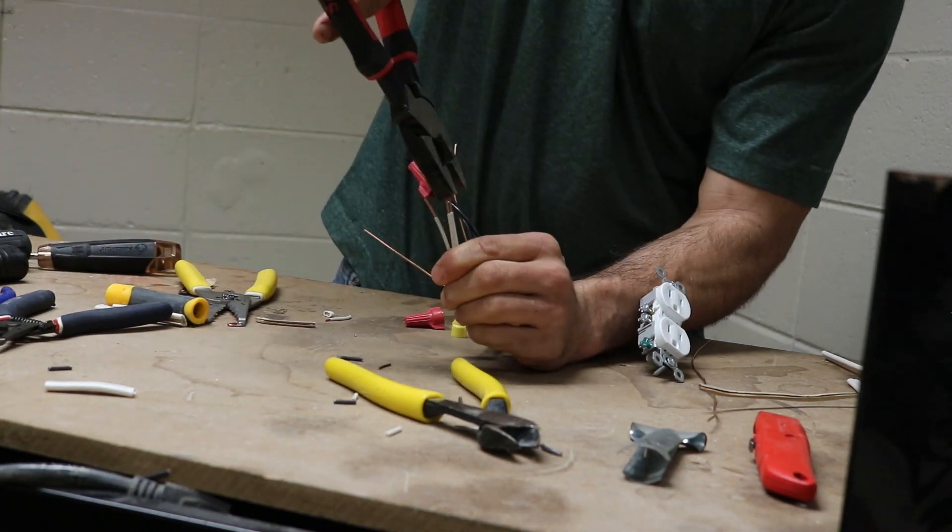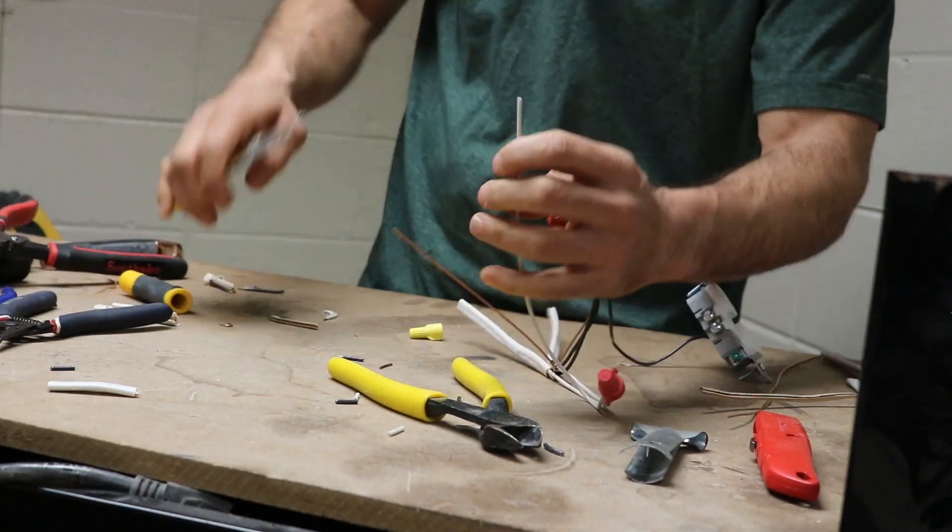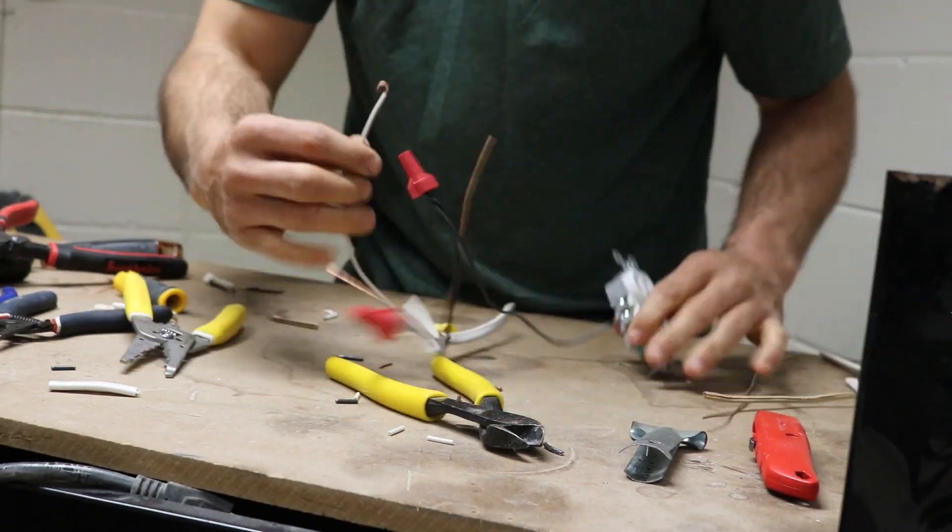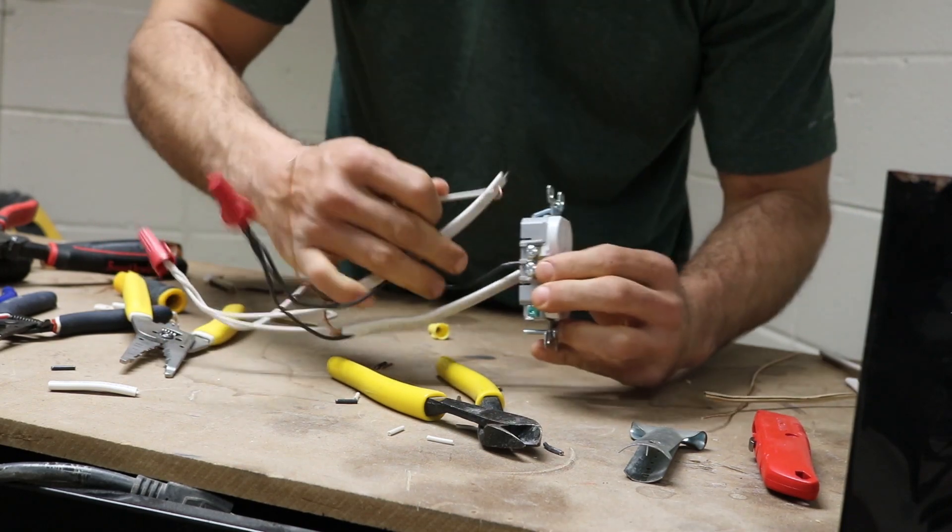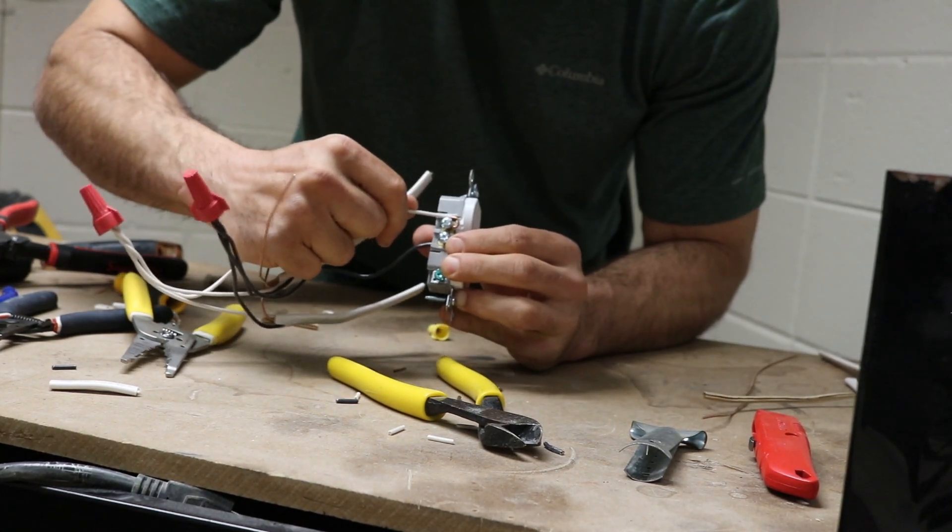This time the hook went underneath on the white one. It's going to go over the top because when I tighten this screw down, I'm going to be tightening it down this way. I'm not going to do it away from me this time like I did it last time.